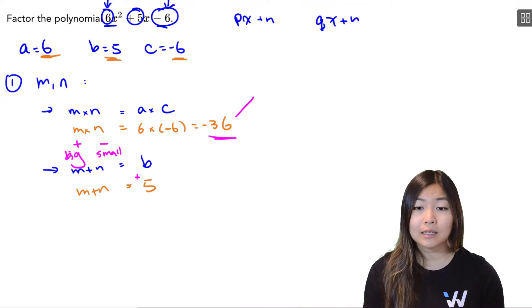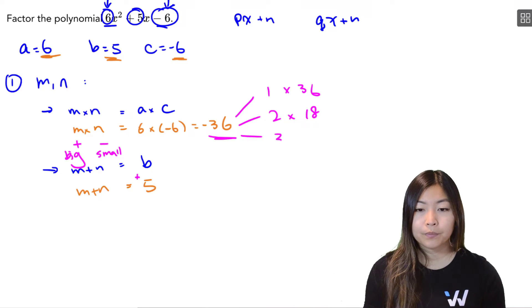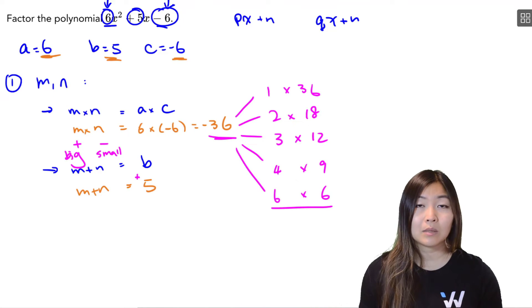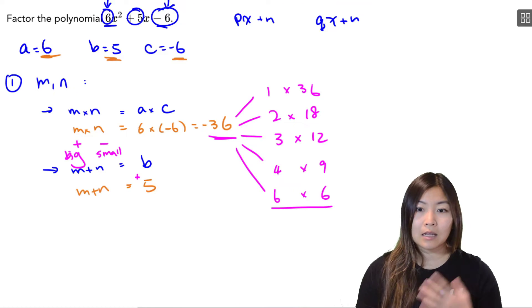So let's list them out. What multiplies to 36? Let's start from 1. 1 times 36. Does 2 work? Yeah, 2 times 18. How about 3? 3 times 12. 4 times 9. 6 times 6. And I can stop right there because I see 6 times 6. If I flip it around, it's 6 times 6 again, so I'm repeating.